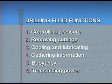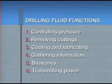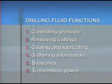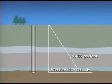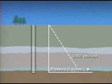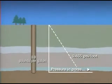Let's look at each of these functions individually. The normal fluid pressure gradient of the earth is about 0.465 psi per foot of depth, which is equivalent to a column of fluid weighing about 8.9 pounds per gallon.